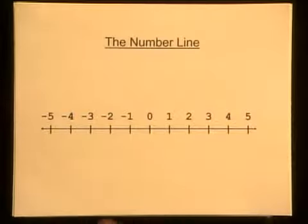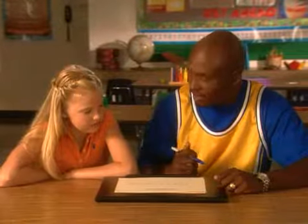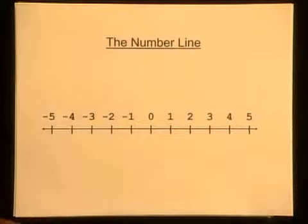Check out the deal here. Here we have a number line. I'm sure you've already dealt with positive numbers before — one, two, three, four, five, and whatnot. Now we're also going to introduce negative numbers. These are the numbers to the left of zero, okay?